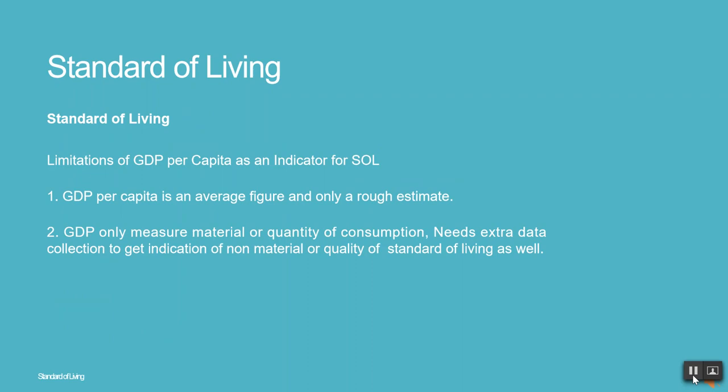Limitations of GDP per capita as an indicator for SOL: 1. GDP per capita is an average figure and only a rough estimate. 2. GDP only measures material or quantity of consumption, and needs extra data collection to get an indication of non-material or quality of standard of living as well.